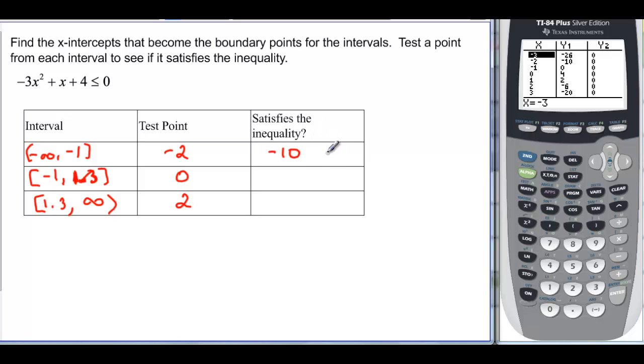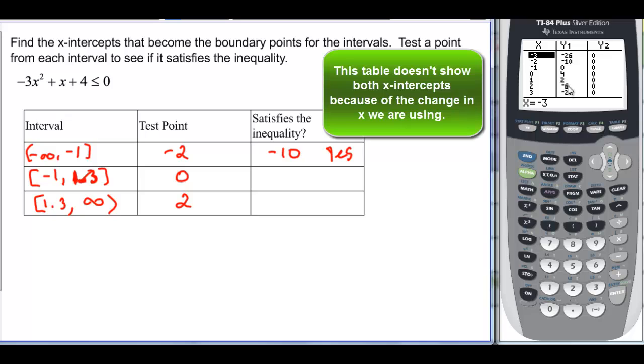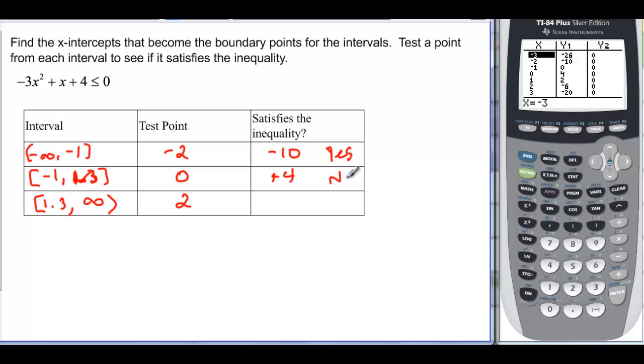And does that satisfy my inequality? Is it less than or equal to 0? Yes. Then I'm choosing a test point of 0, and it's a positive. And it's a positive all the way looking in this table until I get up to a 2. But it's actually at 1.3. So at 0, I actually end up with a positive 4. So it doesn't satisfy.